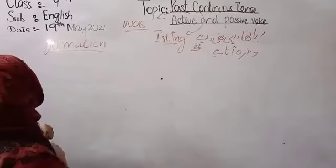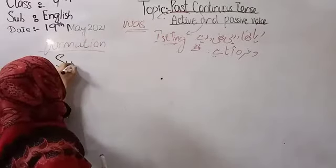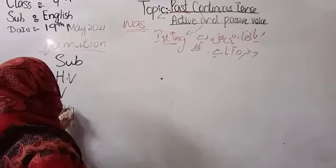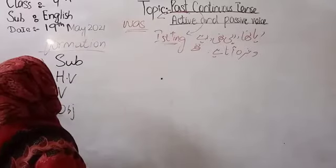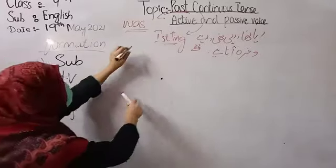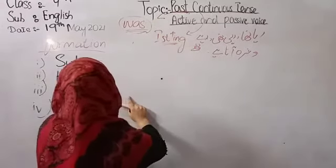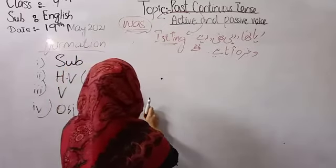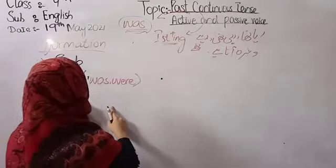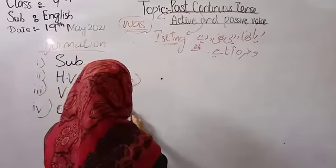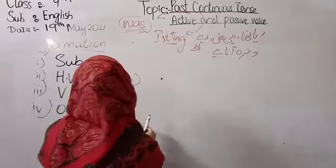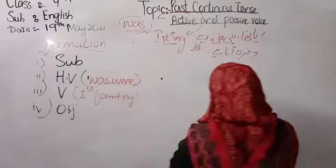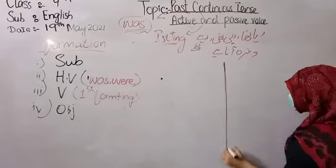The first thing that you use in the past continuous tense: first comes the subject, then comes the helping verb, third comes the verb, and fourth comes the object. As for the helping verb, it is from the past tense. And the verb here uses first form plus -ing. This is a simple tense where you use first form plus -ing.